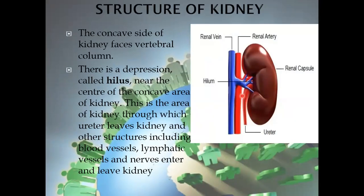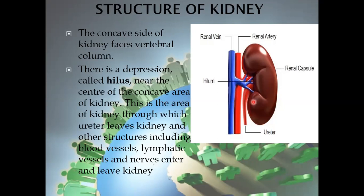Looking at the structure of the kidney, there is a convex side and a concave side. The concave side faces the vertebral column. This depression near the center of the concave area is called the hilum. Through this area, the ureters arise — a pair of ureters from both kidneys. Other structures including blood vessels, lymphatic vessels, and nerves also enter and leave the kidney through the hilum.